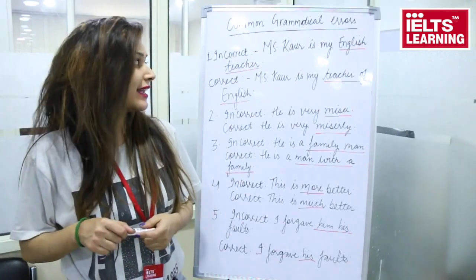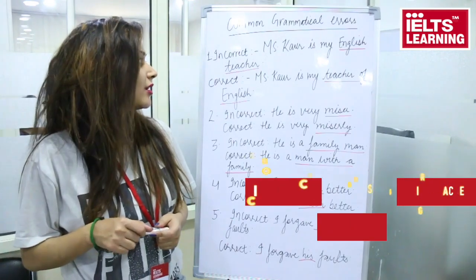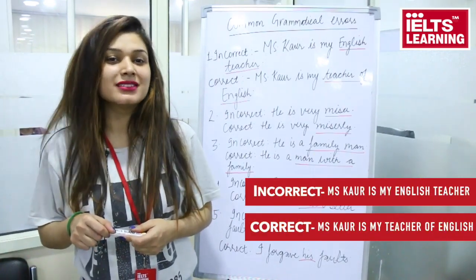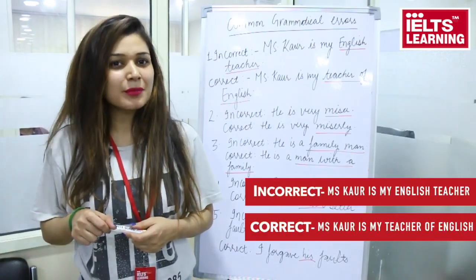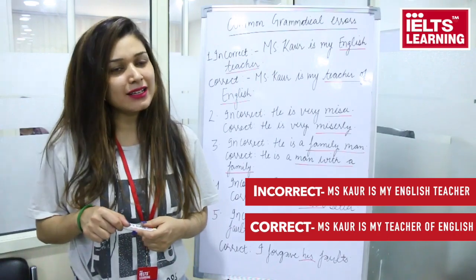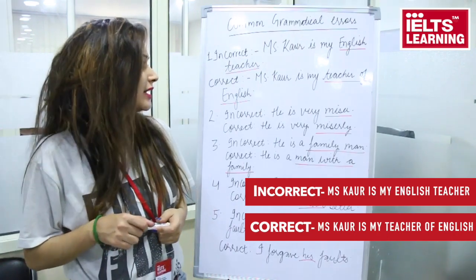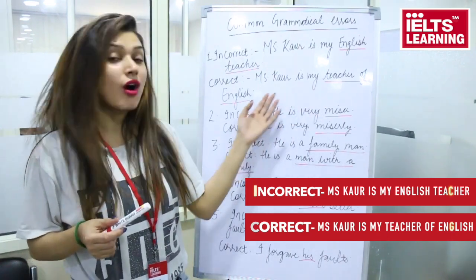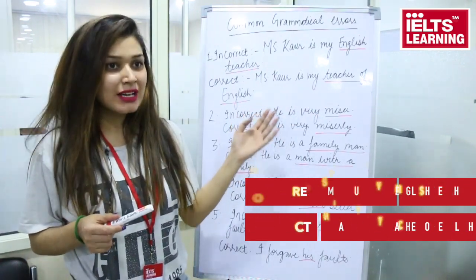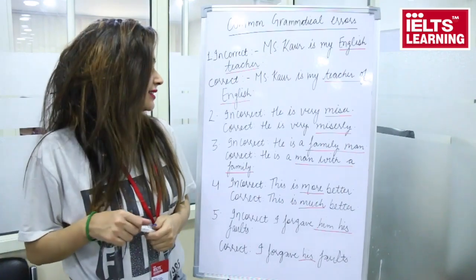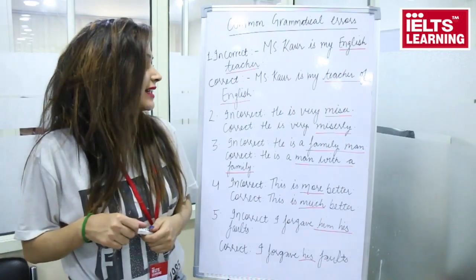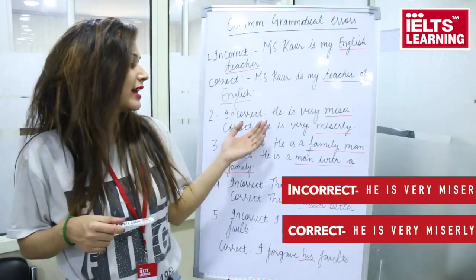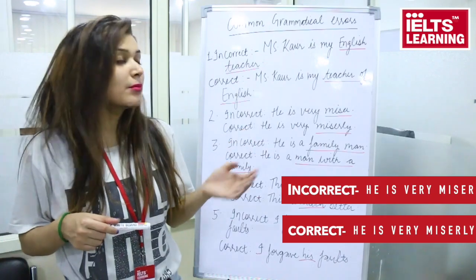Example one: 'Miss Cor is my English teacher' — it's correct but it's a slang, so grammatically the correct form is 'Miss Cor is my teacher of English.' The second sentence says 'he's very miser,' which is incorrect.